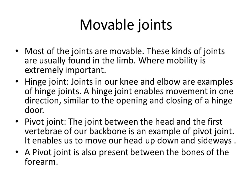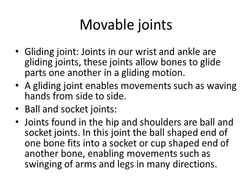Next, the pivot joint. The joint between the head and the first vertebra is an example of a pivot joint. It helps to move our head up and down. A pivot joint is also present between the bones of the forearm.